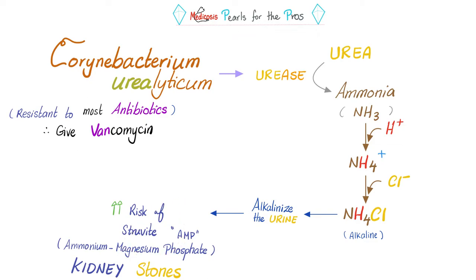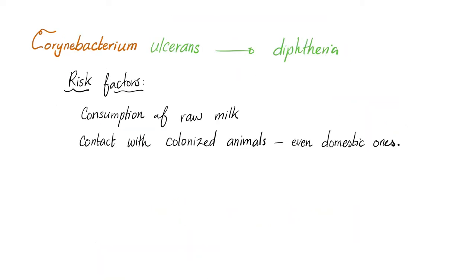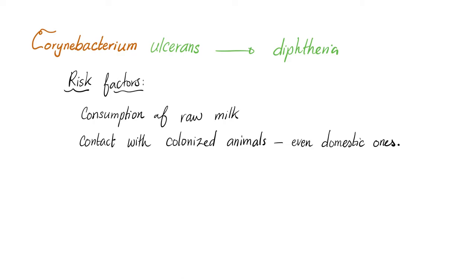Corynebacterium ulcerans also causes diphtheria. Risk factors include consumption of raw milk or any raw animal product, and contact with colonized animals, even domestic dogs and cats.